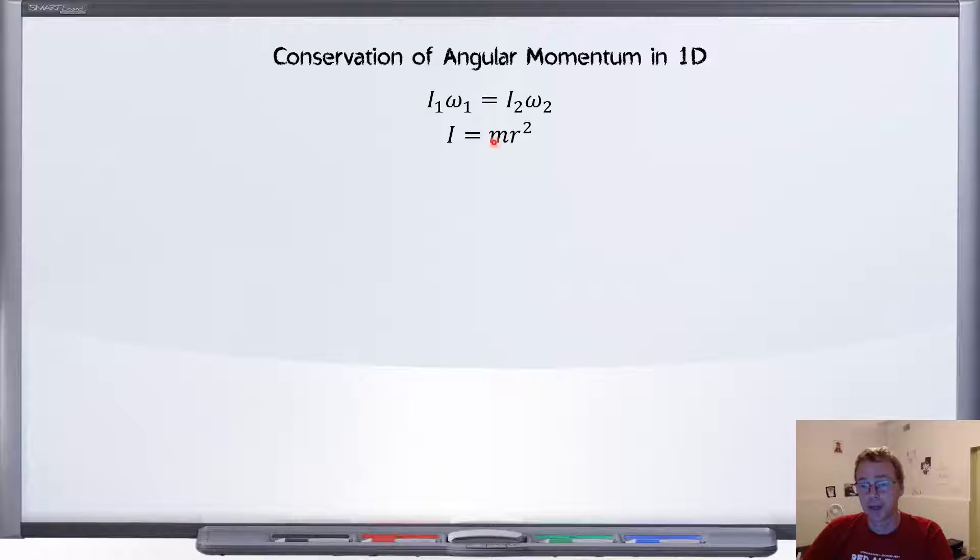If we simply plug in this equation in here for i, we'll get this. The masses can drop out. And let's express that now as ratios. Ratio expressing the ratio of the final angular speed to the original angular speed as an equation, as a ratio of the original radius to the final radius. And that's what we get.